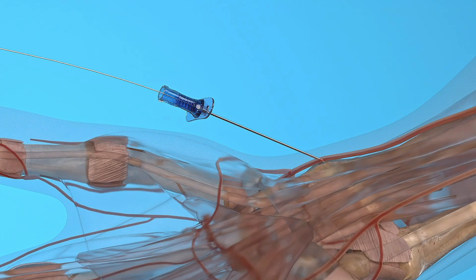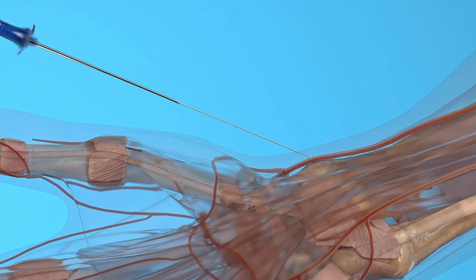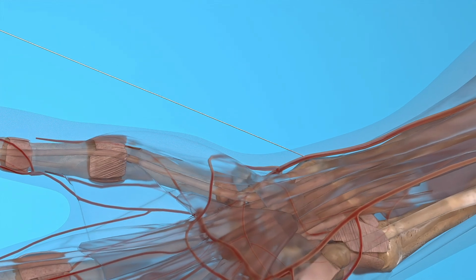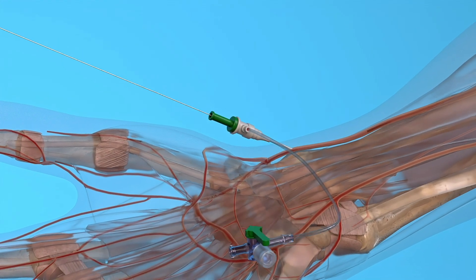After accessing the artery, a hydrophilic wire is introduced through the needle using the Seldinger technique. Once the needle is removed, an introducer sheath is placed into the artery.